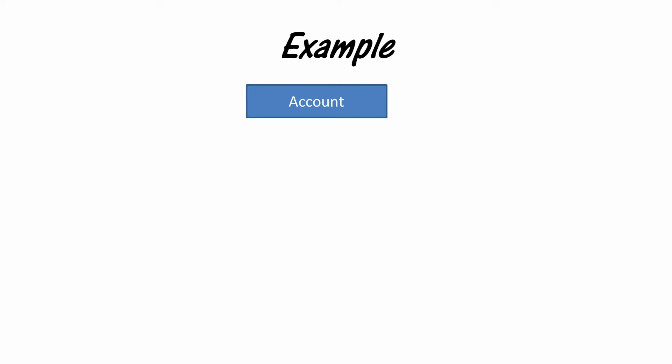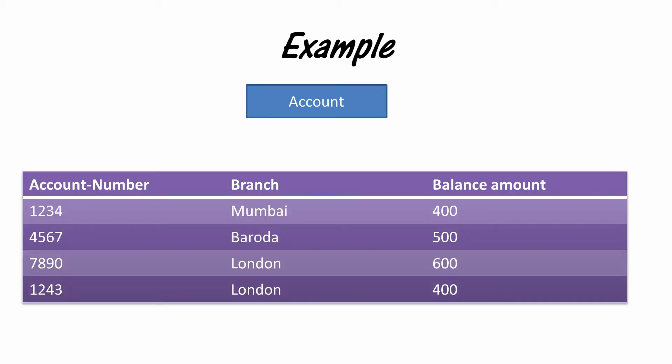Let's say there is a table called 'account'. We are comparing a relational DBMS with a table because a relational database consists of lots of tables. Now, as you can see, this table has three headers: account number, branch, and balance amount.